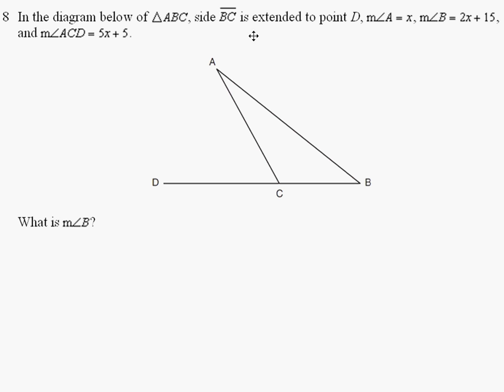Let's begin by labeling the given information. Angle A is x, angle B is 2x plus 15, and angle ACD, which is this angle here, is 5x plus 5.